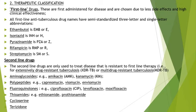So in this classification we have seen anti-tubercular agents divided by chemical classification and therapeutic classification. In chemical classification we have seen synthetic anti-tubercular agents and antibiotics. In therapeutic classification we have seen first-line drugs and second-line drugs.